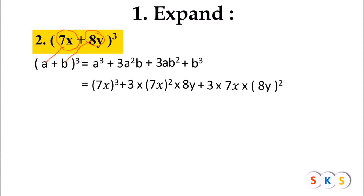And what is b? 8y. So 8y the whole squared, plus b raised to 3, that is 8y the whole cube. After substituting the value of a and b we will simplify further. 7x the whole cube means 7x into 7x into 7x. Cube of 7 is 343 and cube of x is x cubed, so it is 343x cubed.